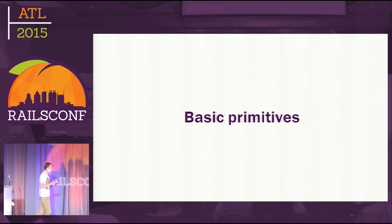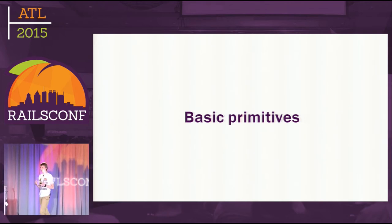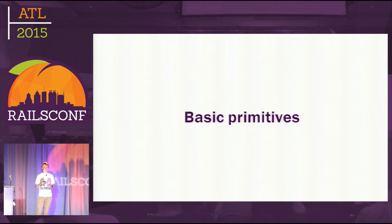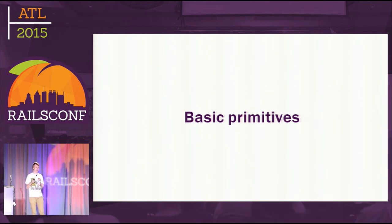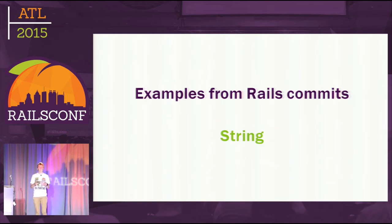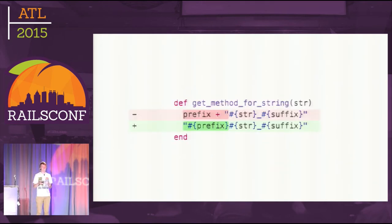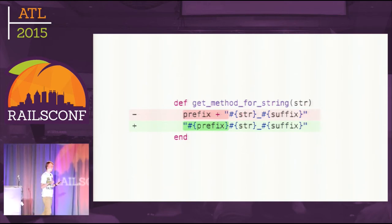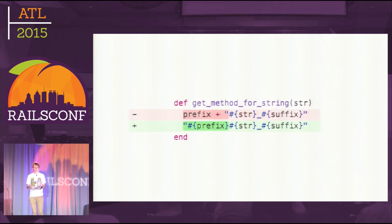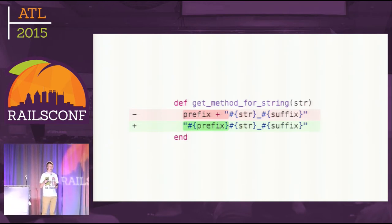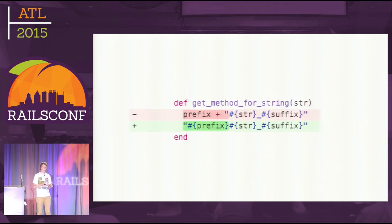A lot of performance issues can be solved just by keeping in mind a set of tricks about how basic data primitives in Ruby work — strings, hashes, blocks, arrays, and so on. The first commit is by Aaron Patterson. The problem was that the code used the plus method to concatenate two strings, while interpolation is way faster. Another benefit is that we don't allocate one more string before concatenation — we just use interpolation once.